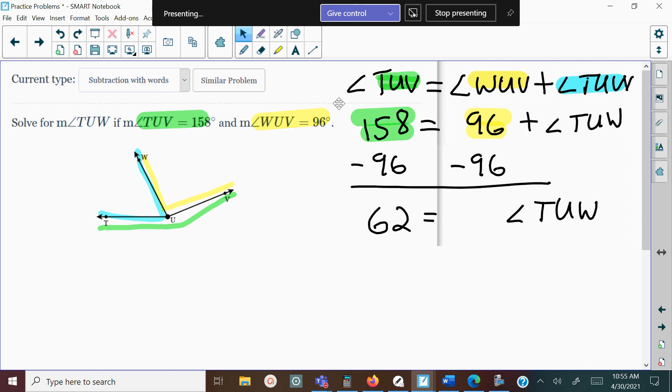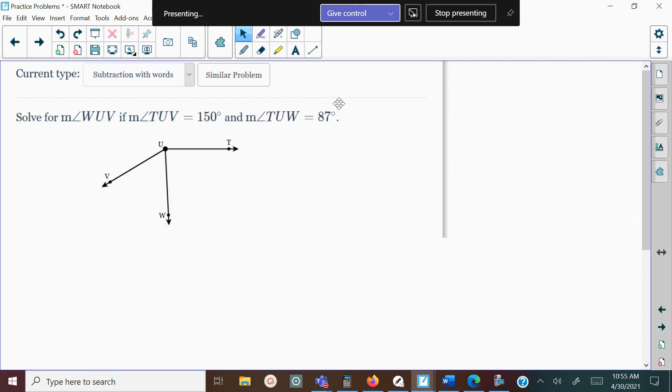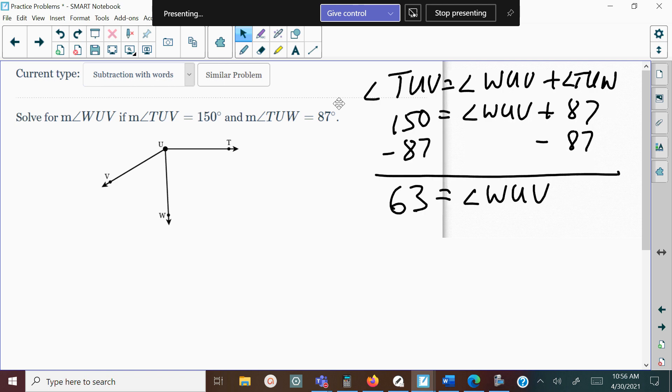Go ahead and pause the video and see if you can solve this next one on your own. Let's take a look and see what you should have got. You should get 63. Notice TUV is the bigger angle, and TUW is the smaller angle. Then you plug in the ones you have: TUV is 150 and TUW is 87. Subtract 87 on both sides, and you get 63.